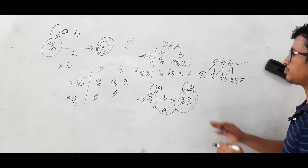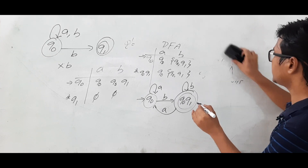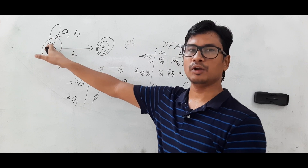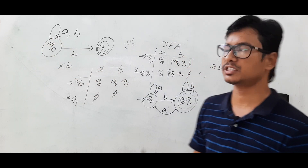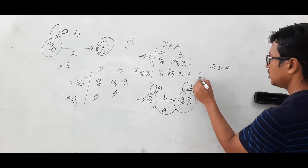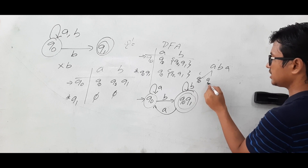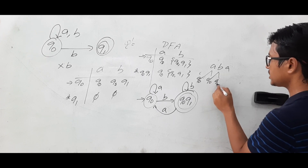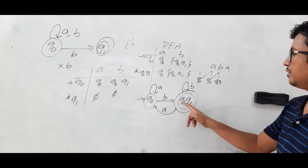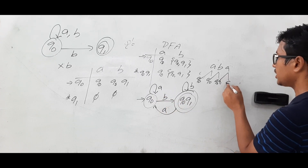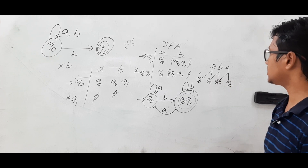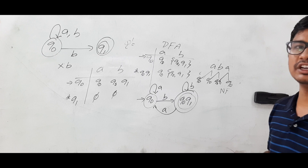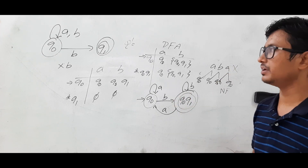Now let me take string ABA, which does not end with B, so it should not be accepted. From Q0 on A → Q0, Q0 on B → {Q0,Q1}, {Q0,Q1} on A → Q0. We reach Q0, which is a non-final state, so the string ABA is not accepted by the DFA.